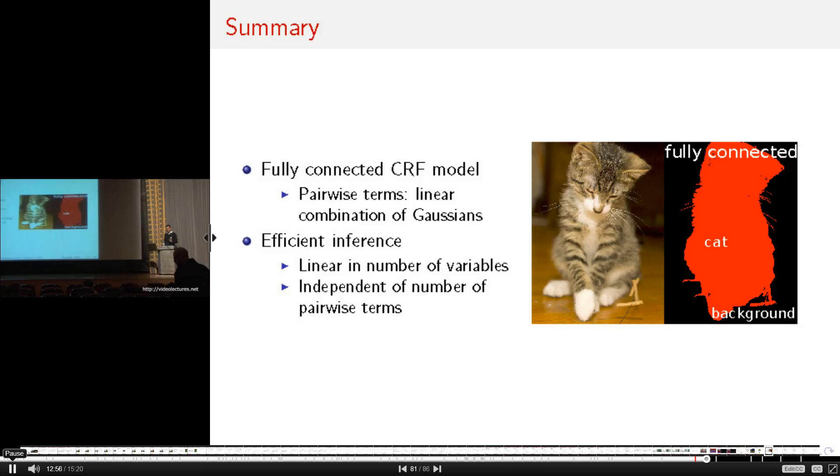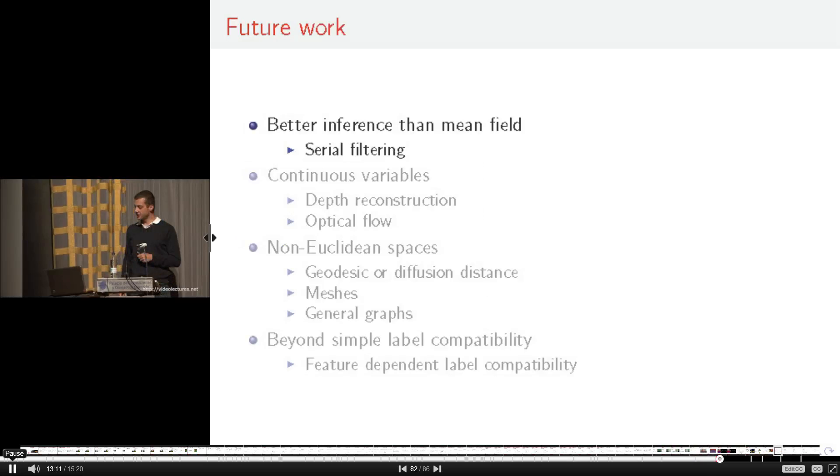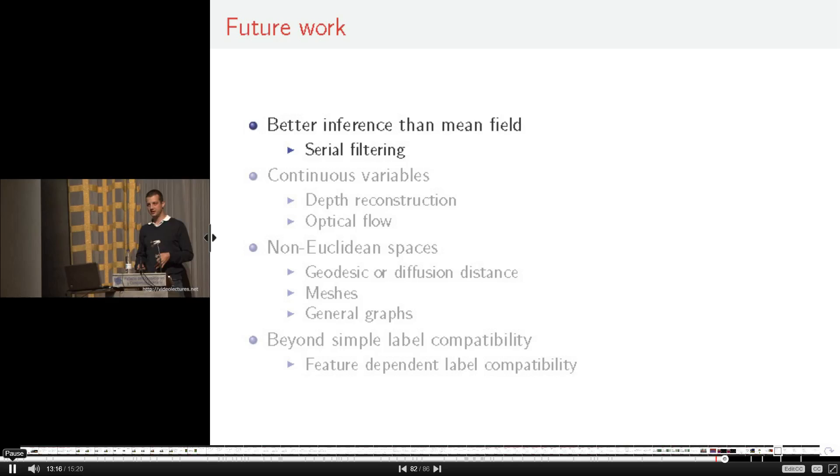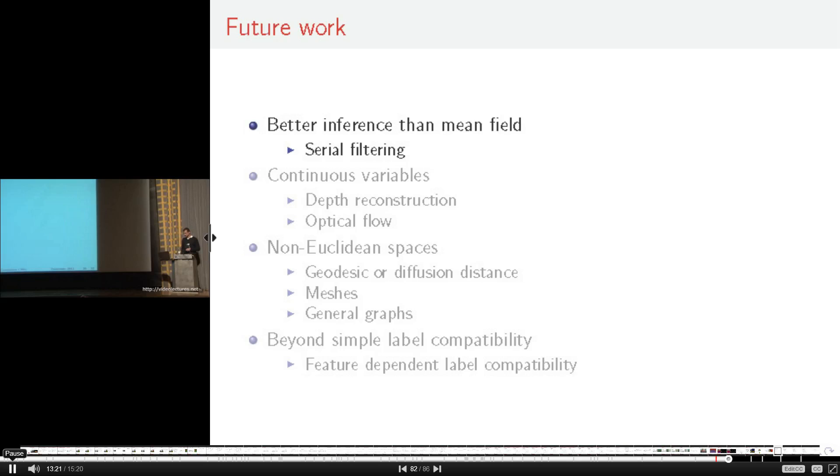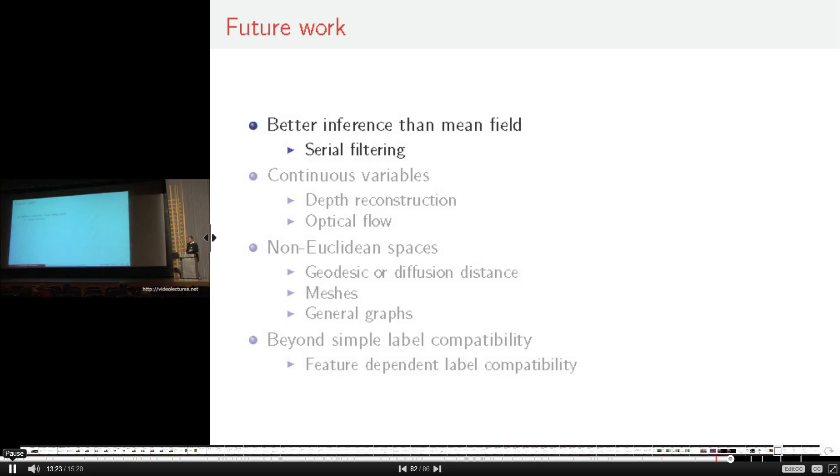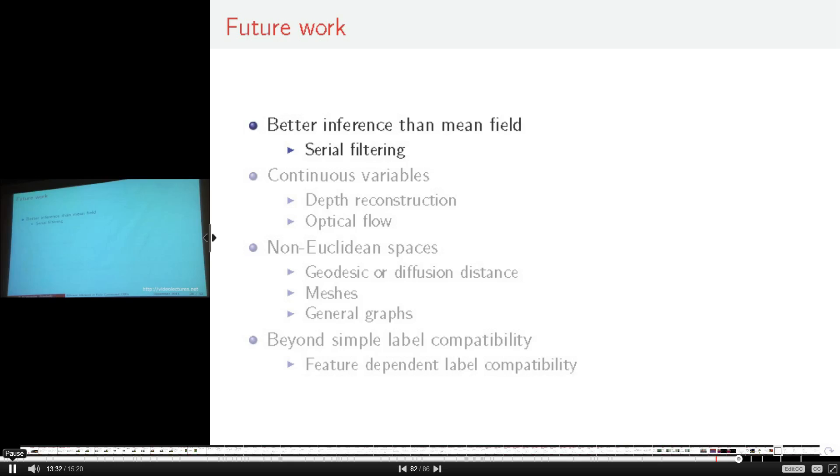Let's look at some future work. One area of future work we're currently investigating is going beyond this simple mean field approximation and finding an approximation algorithm that is more accurate. I personally believe the key to that is lifting some of the restrictions the filtering impose on our algorithm, which is the filtering needs to update all variables at once, and finding a filtering algorithm that allows us to update single variables at once is what I think is the key to finding a better inference algorithm in those fully connected models.